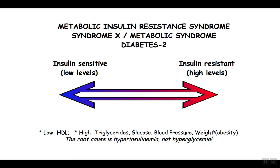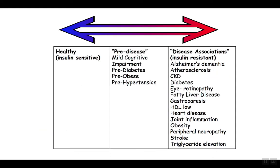So there's your metabolic syndrome: low one thing — HDL — and high everything else: triglycerides, glucose, blood pressure, and weight. The root cause is hyperinsulinemia, not hyperglycemia. All the different progressive diseases — mild cognitive impairment, pre-diabetes, pre-obesity, pre-hypertension, chronic kidney disease, eye disease, fatty liver disease, gastroparesis, peripheral neuropathies, and strokes — all have insulin resistance as a component of their disease progression.